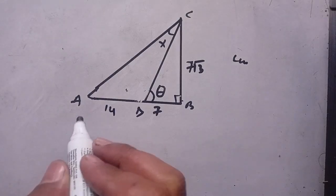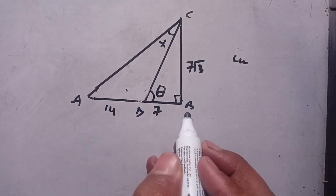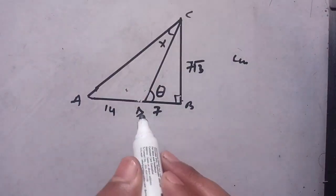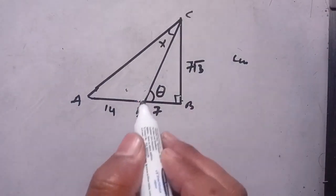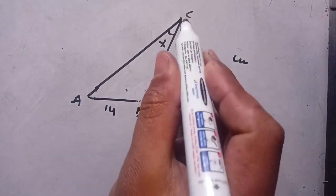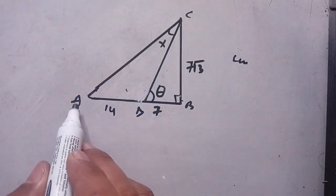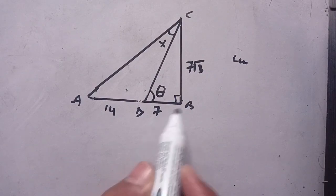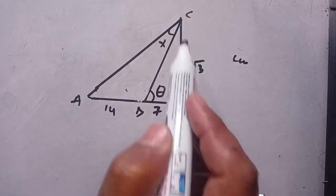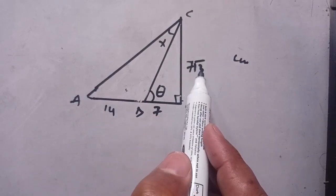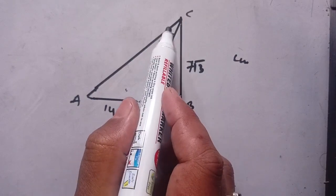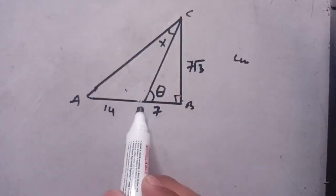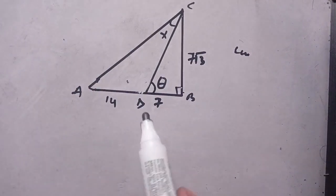Hello everyone. In today's video we are going to solve this geometrical problem. Here is a triangle ABC, and in a line is DC. In the triangle, AD is equal to 14 centimeters, DB is equal to 7 centimeters, BC is equal to 7 square root of 3 centimeters, and we have to find the value of x, which means we have to find the angle ACD.